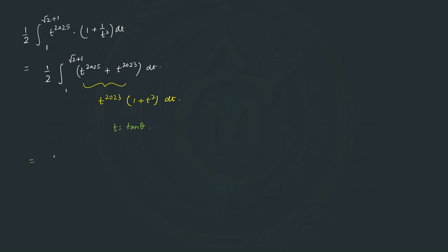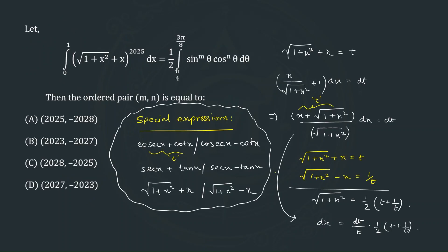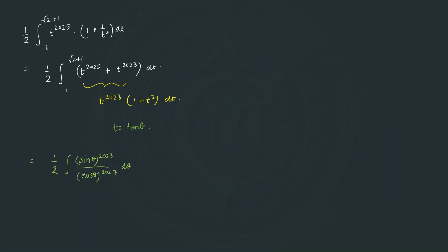Substituting t = tan θ, the integral becomes (1/2) times the integral of [sin^2023 θ / cos^2023 θ] · sec⁴ θ dθ, which simplifies to (1/2) · sin^2023 θ · cos^(−2027) θ dθ. The limits transform as: when t = 1, tan θ = 1 so θ = π/4; when t = √2 + 1, tan θ = √2 + 1 so θ = 67.5° = 3π/8 (a standard angle to remember).